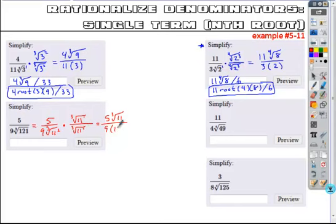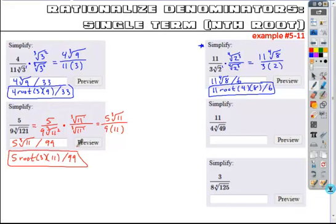Again, the root and power cancel, leaving just my base 11. 5, 9, 11, nothing cancels here, so I get 5 times the cube root of 11, all divided by 99. And if I was entering this online, cube root is represented by root 3 of 11, divided by 99, and that would be the simplified form.